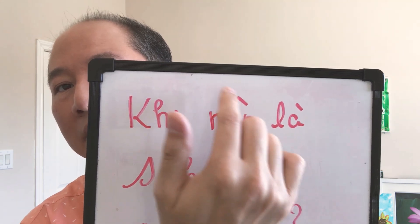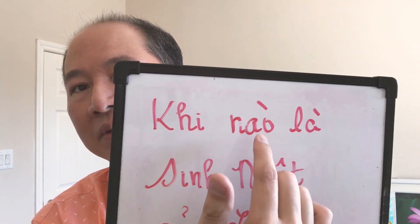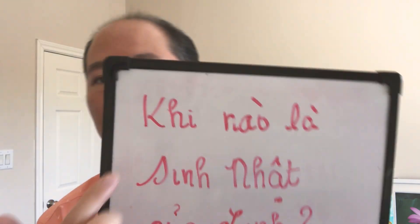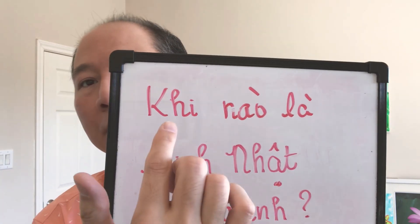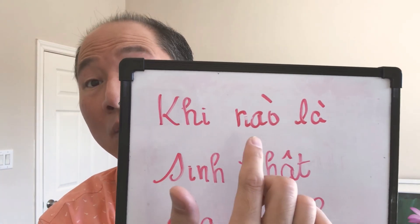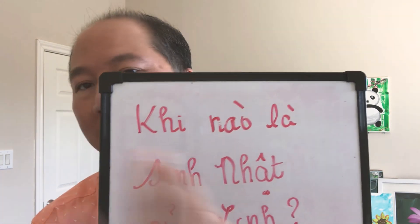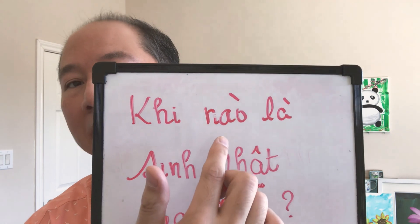Now you may see this little mark on the letter O that brings the word down a little bit. So if I didn't have that accent, it would be pronounced khi nào — you see — whereas with this mark, it says khi nào. You have to lower the sound for that particular syllable, otherwise the meaning is lost.